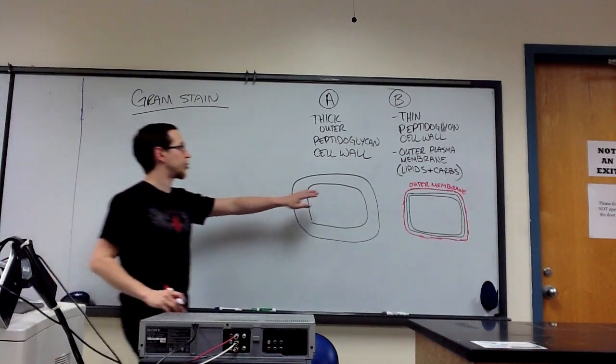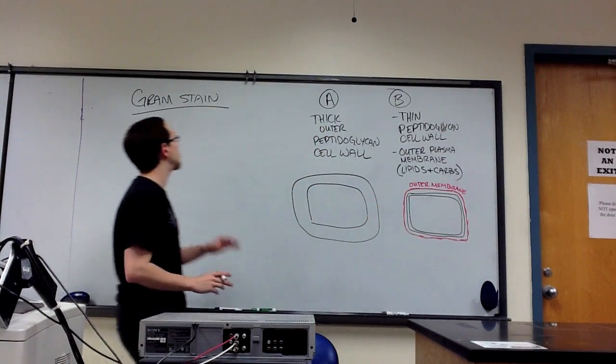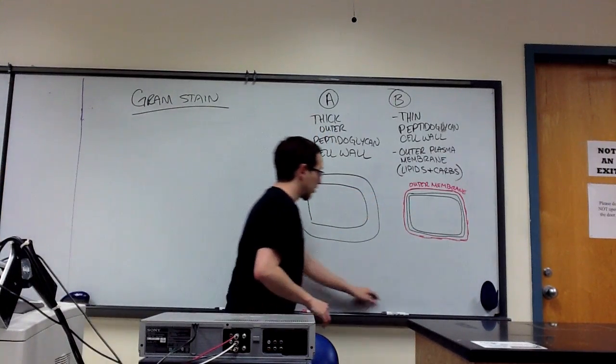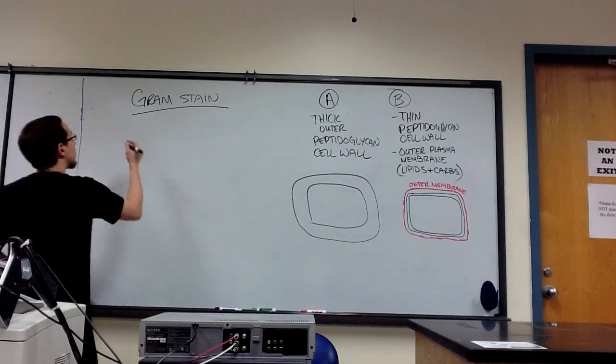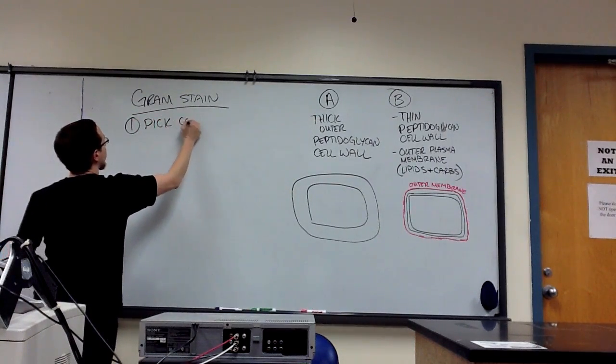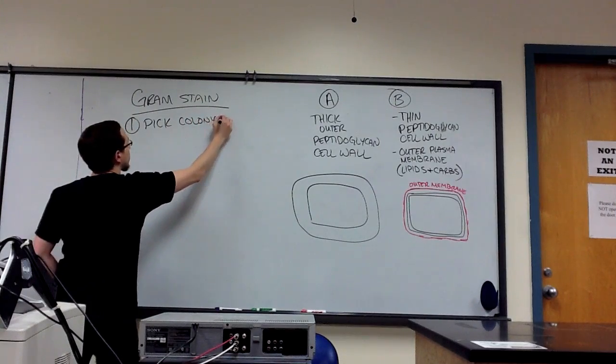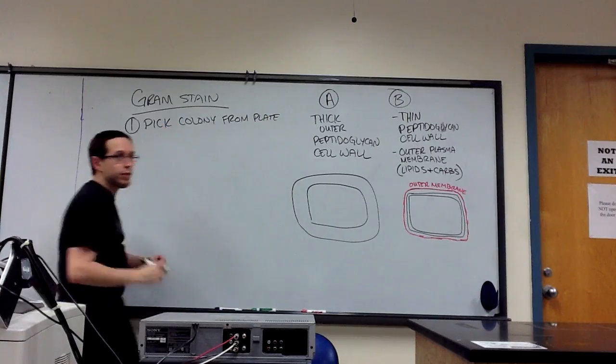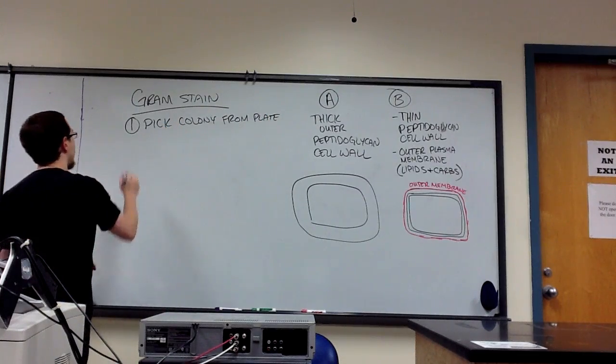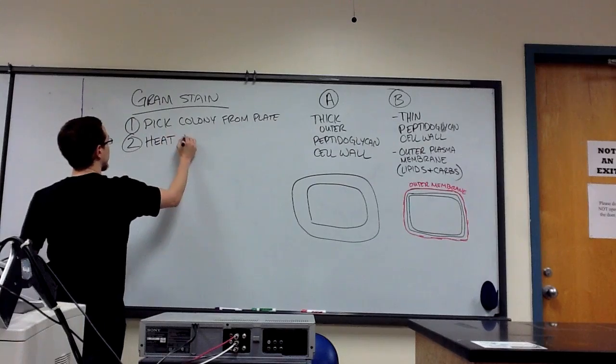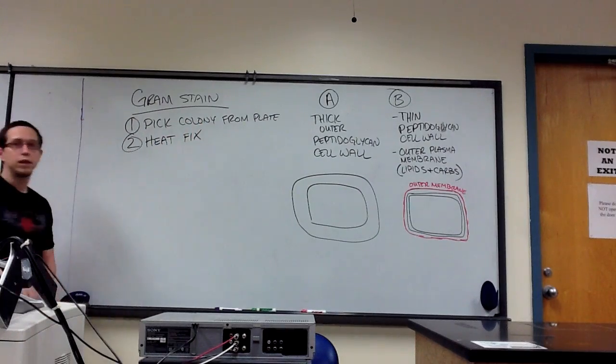So we're going to distinguish between these two different cell types using the Gram-Stain technique. So what we're going to do first is you're going to pick a colony of cells from a plate and then you're going to do what's known as heat fix them.